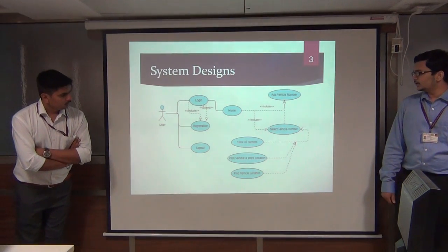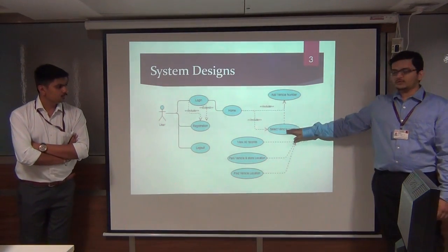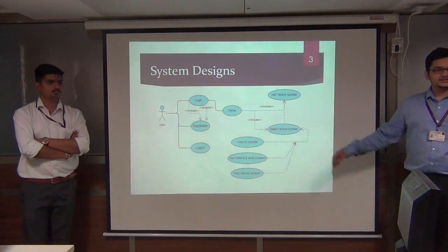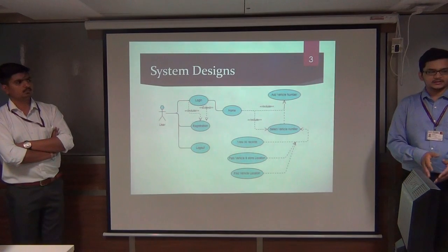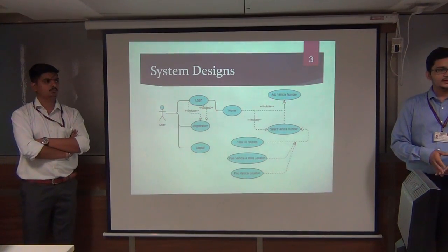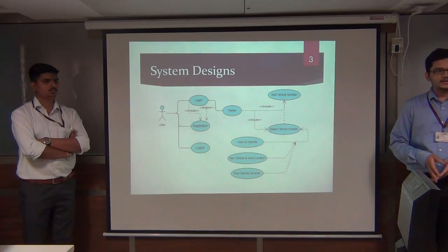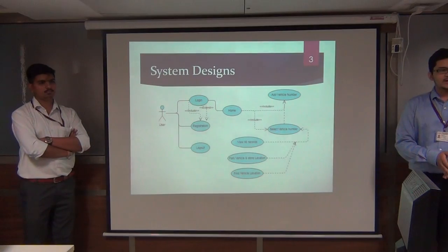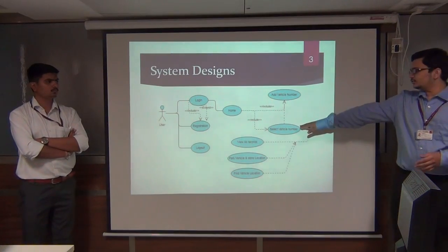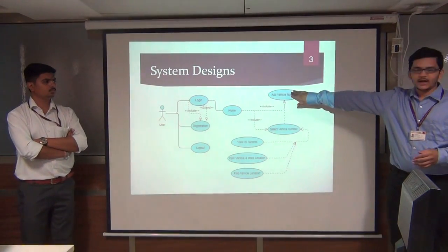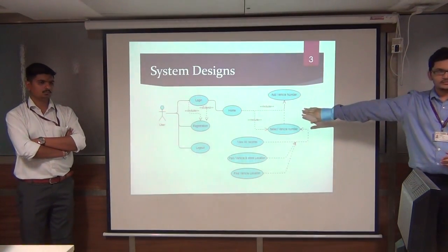The vehicle number feature supports multiple cars. For example, if you have car number 1234 and another 5678, and you want to park car 1234, you can select it from the list after adding how many cars you have.